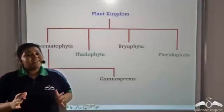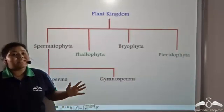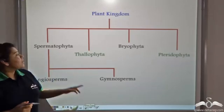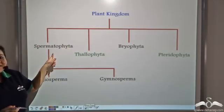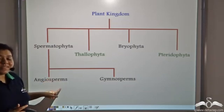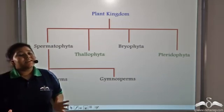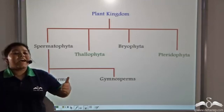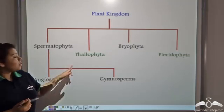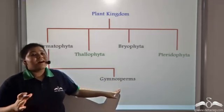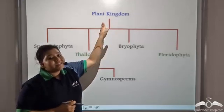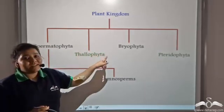The plant kingdom has been broadly classified into four different phyla. Spermatophyta, which is further divided into angiosperms — plants whose seeds are encapsulated within the fruit — and gymnosperms, where the seeds are naked. The next phylum under the plant kingdom is Thallophyta, followed by Bryophyta, and finally Pteridophyta.